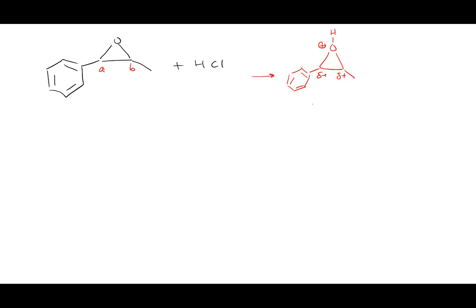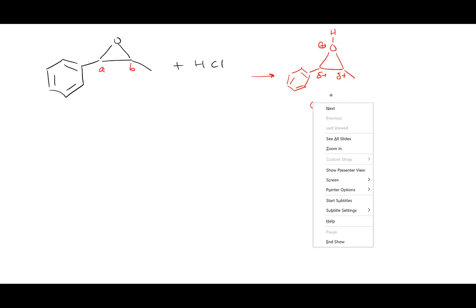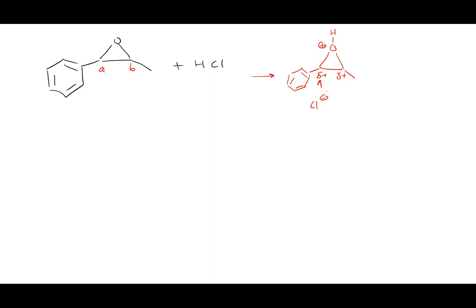The Cl⁻ will come in and add to carbon A because it's benzylic and has the most delta-positive charge. The OH swings over to B. You could swing the OH to the right or left to show the carbocation — they would both be secondary, but one is secondary benzylic versus secondary non-benzylic. Keeping the triangle intact means the chlorine and OH have to be trans. The benzylic position has the most delta-positive charge, so that's the argument for adding the chloride to A.